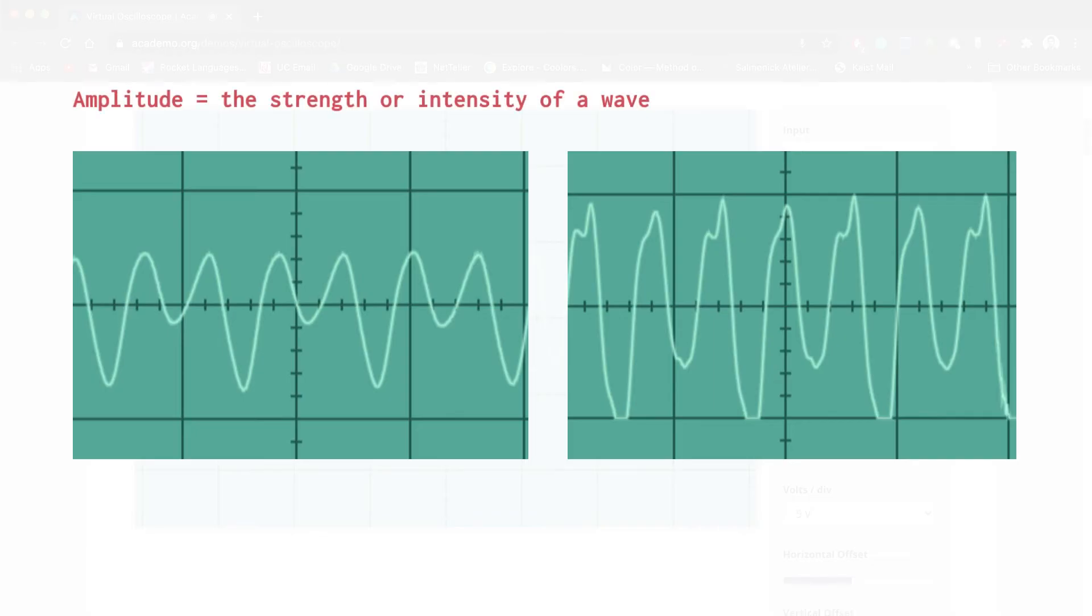Remember, the amplitude of a wave is its strength or intensity. On the left side of the screen, we have the soft oo sound and on the right side, we have the louder oo sound. Notice how when I made the soft oo, the peaks of the wave are much shorter than when I made the louder oo sound. I didn't change the note or the noise I was making, only the loudness or intensity. This is what we call amplitude.